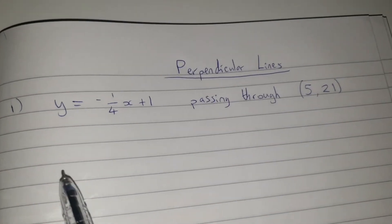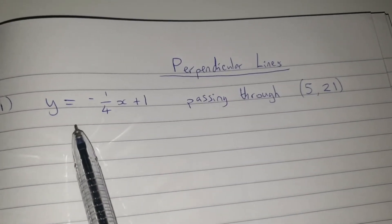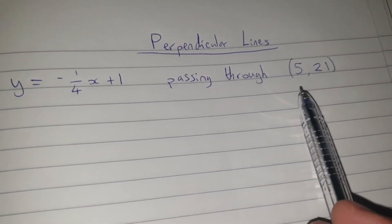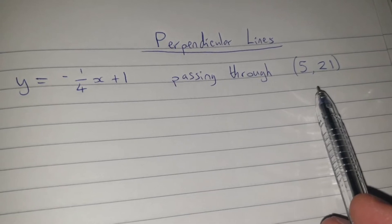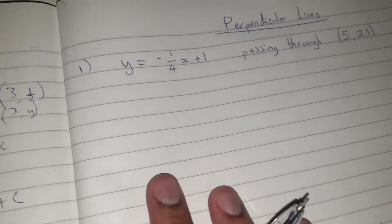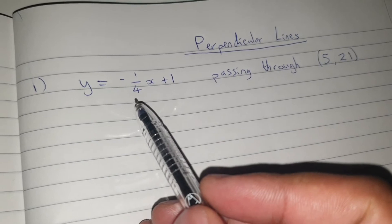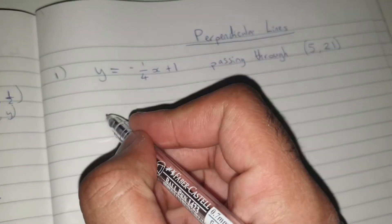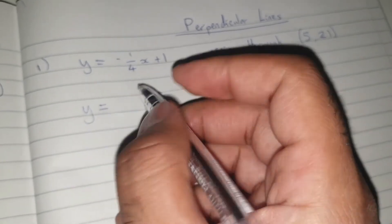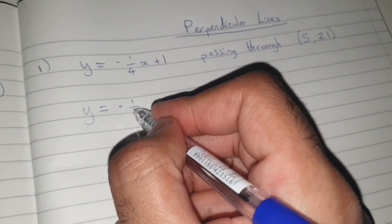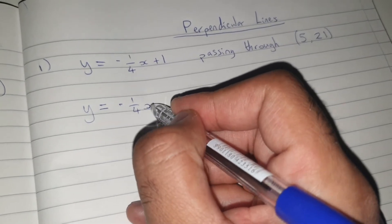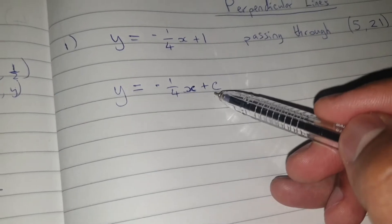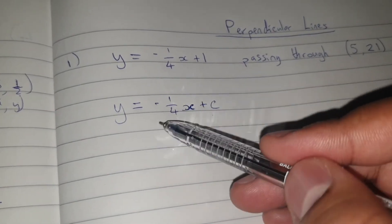Question 1 asks you to find the line which is perpendicular to y equals negative one quarter x plus 1 and passes through the point (5, 21). First of all, we need to find the gradient of the line which is perpendicular to this line. So the general equation for this line is y equals negative one quarter x plus c. We can isolate the gradient on its own.